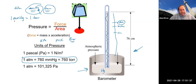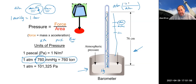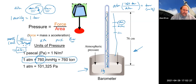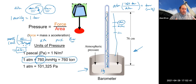To convert between pressure units: if you have atmospheres and want millimeters of mercury or Torr, multiply by 760. Going the other way — from mmHg or Torr to atmospheres — divide by 760. So 760 is the key conversion factor between these units.